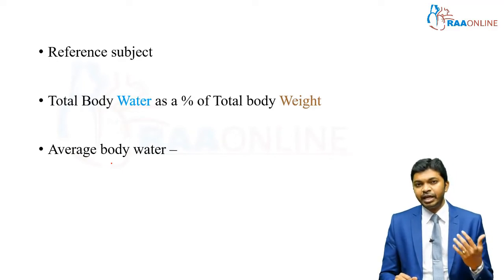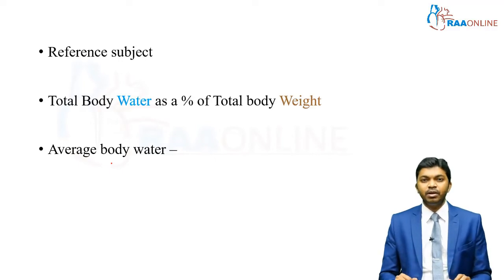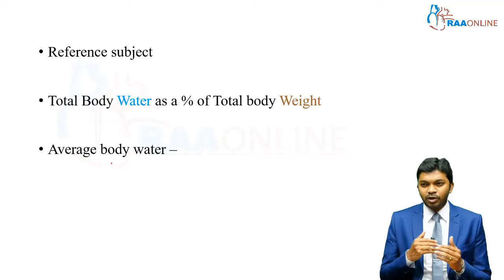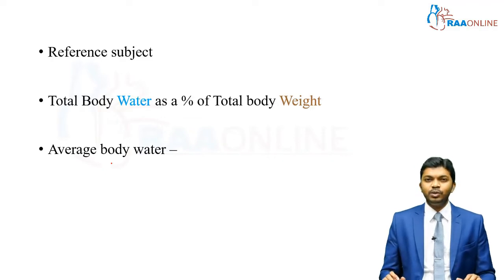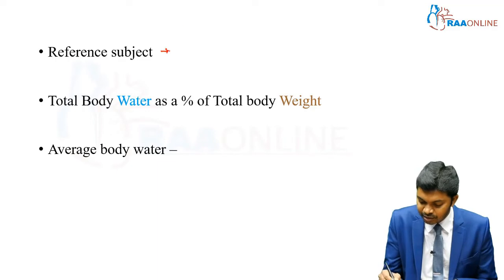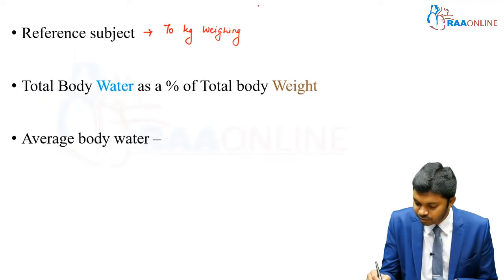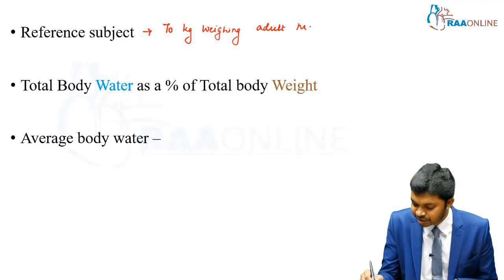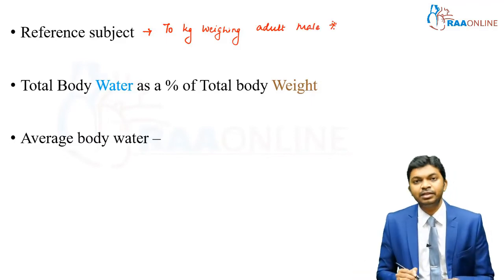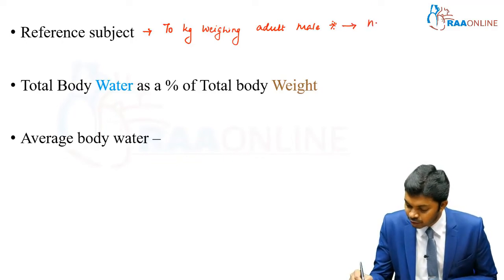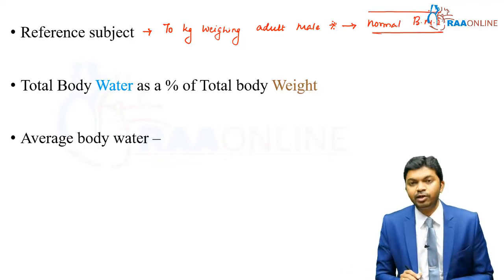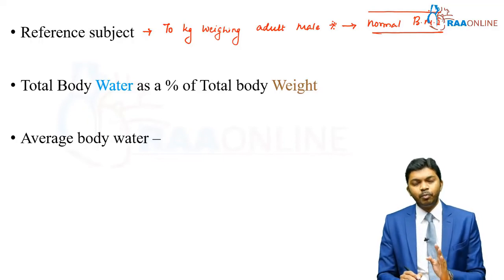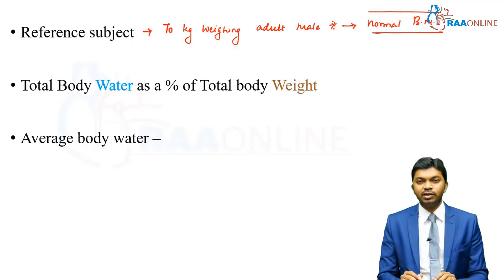It is not a normal value — it is an average value for that age group and population. Body water differs between age groups and between genders. But in order to put it in a narrow range and assess how much is distributed on average, we take values from a reference subject. That reference subject is a 70-kilogram weighing adult male. This male should have a normal BMI — the subject should not be obese, overweight, or underweight. A 70-kilogram, normally built, moderately built subject with a normal BMI male is the reference subject.